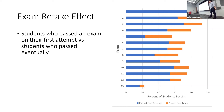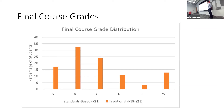My final course grade distribution before this system was a pretty decent bell curve, with a lot of withdrawals — common in statics. D and F are considered failing grades. I combined the plus and minus grades since the new system uses just A, B, C, D, F.